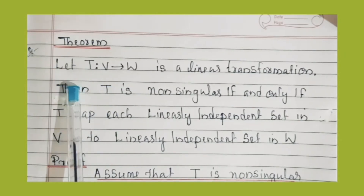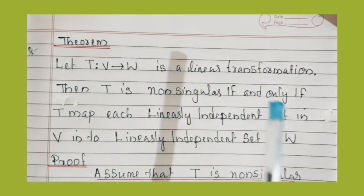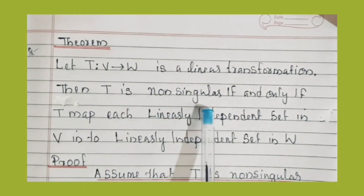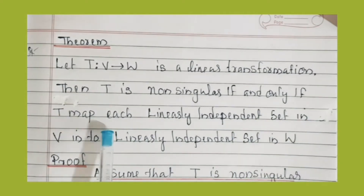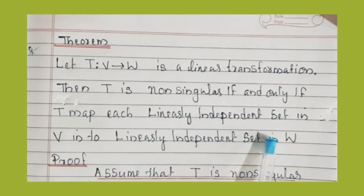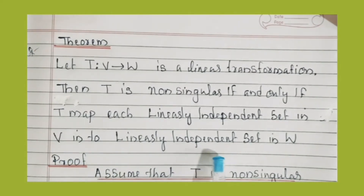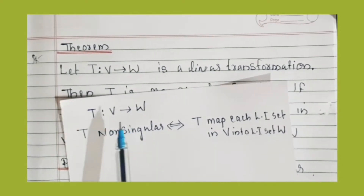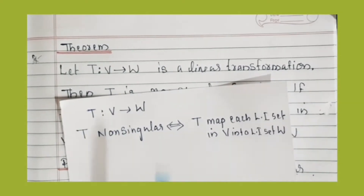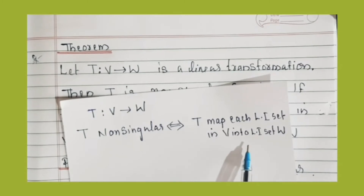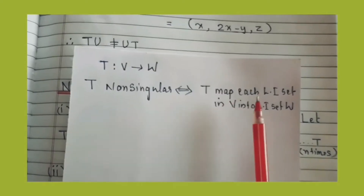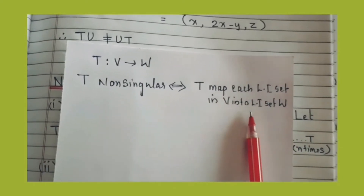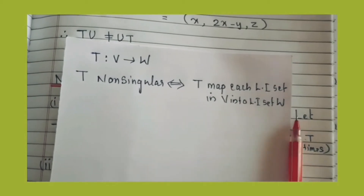Theorem statement: Let T from V to W be a linear transformation. Then T is non-singular if and only if T maps each linearly independent set in V into a linearly independent set in W. T is non-singular means it is a linear transformation from V to W such that T maps each linearly independent set in V into a linearly independent set in W.